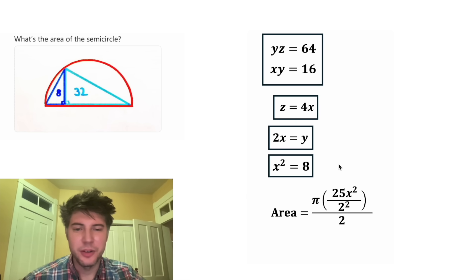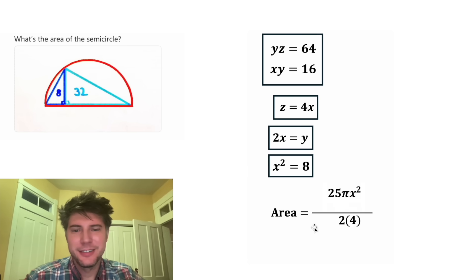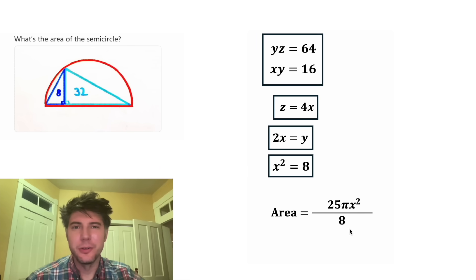This 5 squared is equal to 25. And 2 squared is equal to 4. Let's bring the pi up here and the 4 down here. And now we have 25 pi X squared over 2 times 4. 2 times 4 is equal to 8. So we have area equals 25 pi X squared over 8.